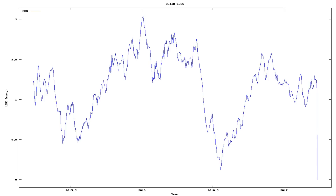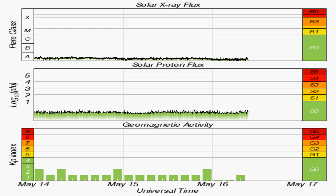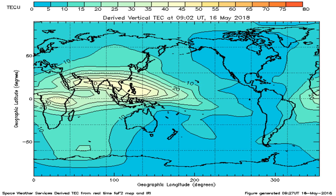And now we see changes in the speed of the rotation of the Earth, along with solar X-ray flux, solar proton flux, geomagnetic disturbances, and another graph of total electron content across the Earth.